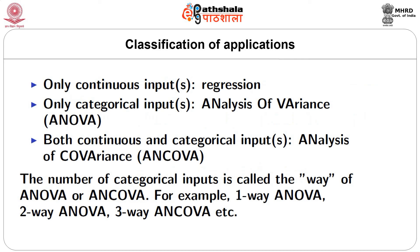We will stop with a brief discussion of terminology. If you have only continuous inputs, that situation is called regression. If you have only categorical inputs, that is a case of ANOVA, or analysis of variance. If you have both continuous and categorical inputs, that is called ANCOVA, or analysis of covariance. The number of categorical inputs is called the way of ANOVA or ANCOVA — for example, one-way ANOVA, two-way ANOVA, three-way ANOVA, and so on.